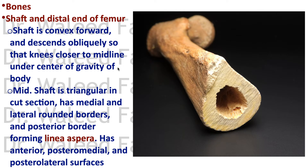The bone of the thigh is the femur, which means 'thigh.' It's the longest and very strong bone in the body. We previously studied the proximal end with the hip joint. Now we're studying the shaft and the distal end of the femur. The shaft is convex forwards and goes obliquely from lateral to medial, so that the knees are closer to the midline than the upper parts of the femur.